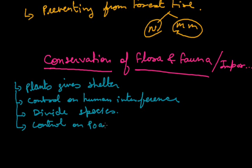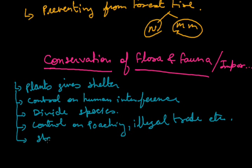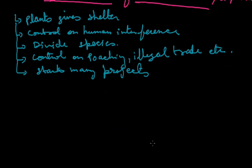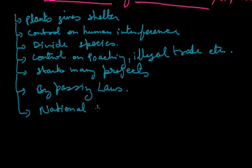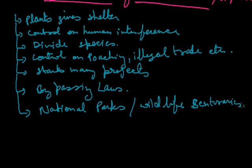Control on poaching, illegal trade etc. For hide, skins, nails, teeth, horns, feather. Starts many projects. Already we started many projects like tiger projects and continue it. By passing laws. By making national parks and wildlife sanctuaries. We already made CITES sites. Which means the convention.